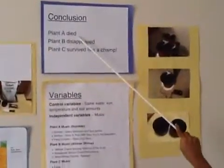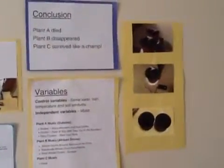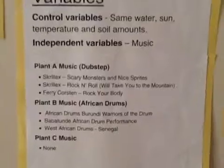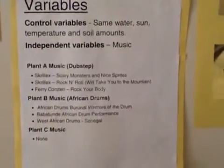Our conclusion was that plant A died. Plant B disappeared — me and my mom were sifting through dirt for at least five minutes and we couldn't find plant B. All you see is dirt, so we just made a little grave right there. Plant A, as you can see, it shriveled up and died. Plant C is just covered up in dirt, but it's still a little bean — it actually opened up a little bit, it just didn't sprout all the way out. Our variable was the same amount of water, same amount of sun, same amount of temperature, and same amount of soil.